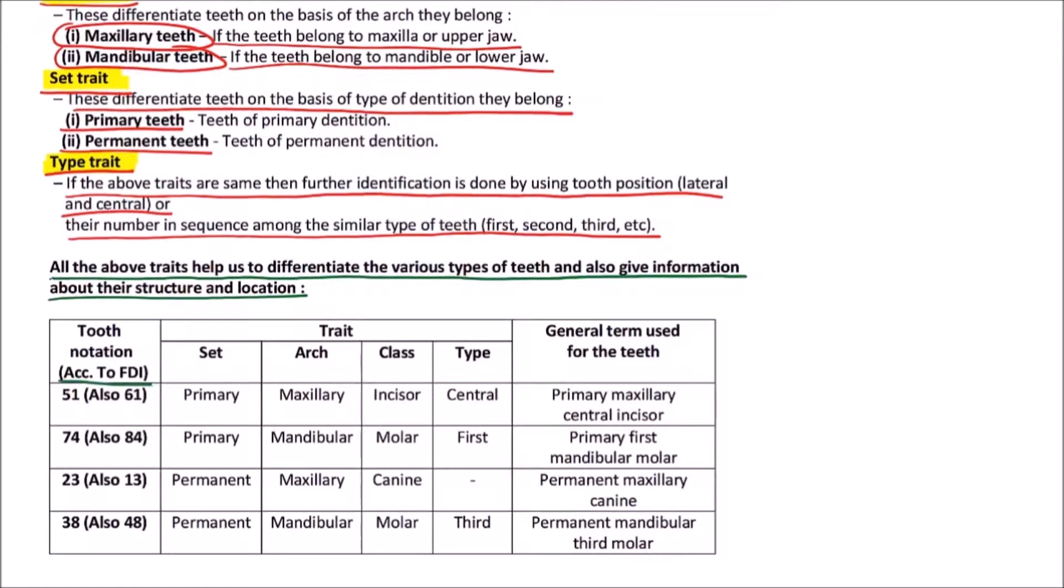According to FDI tooth notation, if we take 51, then set is primary, arch is maxillary, class is incisor, and type is central. So the general term used for such teeth is primary maxillary central incisor. This is also applicable for 84.